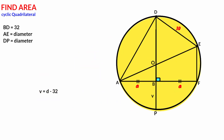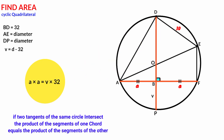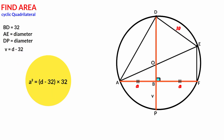Now, this chord intersects the diameter at a point. From circle theory, the intersecting chords theorem states that if two chords of the same circle intersect at a point, the product of their segments are equal. So here, a times a equals v times 32. That gives us a squared equals v times 32. Substituting v as d minus 32, we get a squared equals 32d minus 1024. We keep this equation aside.